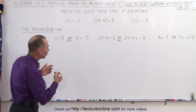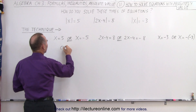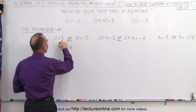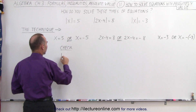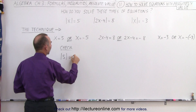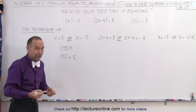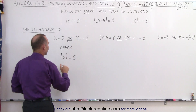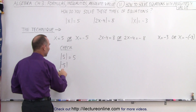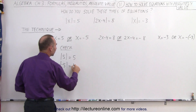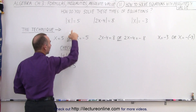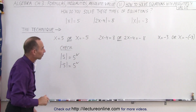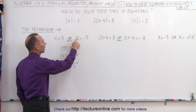We can check, and it's always a good idea to check these things. Let's plug in our two possible solutions. Let's plug in x equals 5 — is the absolute value of 5 equal to 5? Yes, because the absolute value of 5 is indeed 5. What if we plug in the other solution, negative 5? The absolute value of negative 5 is equal to positive 5, which matches. So those are the two correct solutions: x equals 5 or x equals negative 5.